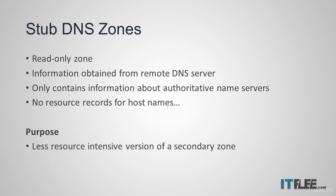A stub zone is similar to a secondary zone in that it is a read-only zone that obtains its information from another remote DNS server. The main difference is that while a secondary zone contains an exact replica including all resource records of a primary zone, a stub zone only contains information about authoritative name servers. So inside a stub zone you will not find resource records for computer names, but instead records for other DNS servers. The purpose is to allow hosts on one network to obtain information from a DNS server on another network without needing to replicate all of the data. You can think of a stub zone as a less resource-intensive version of a secondary zone.